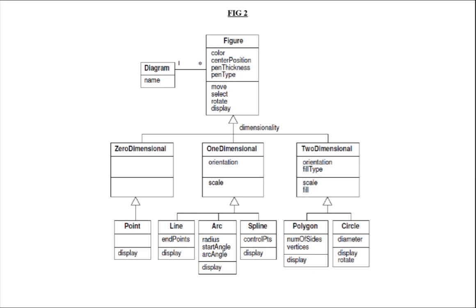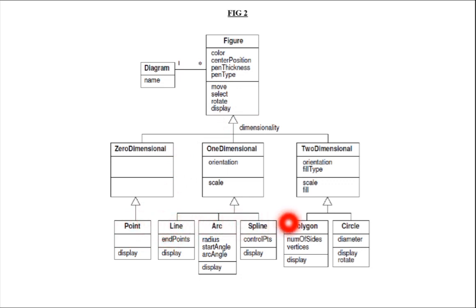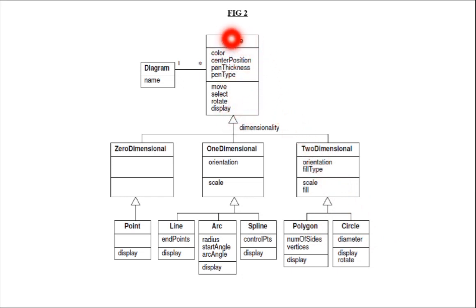Not only attributes can be inherited by subclasses — operations can also be inherited. What are the operations of the superclass figure? Move, select, rotate, display. The operation display of the superclass figure is inherited by the subclasses point, line, arc, spline, polygon, and circle. The same display operation can be inherited by all subclasses from the superclass figure.